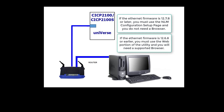The original Universe Finder Utility contained a web utility only and required a supported web browser. That utility was version 1.2.0.0 and earlier. The new Universe Finder Utility is version 1.2.3.x or later. This utility contains a non-web NLM configuration setup page and also the original web utility. In all cases, it is recommended to use the version 1.2.3.x Universe Finder Utility.